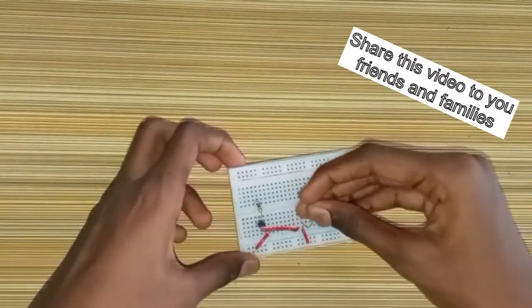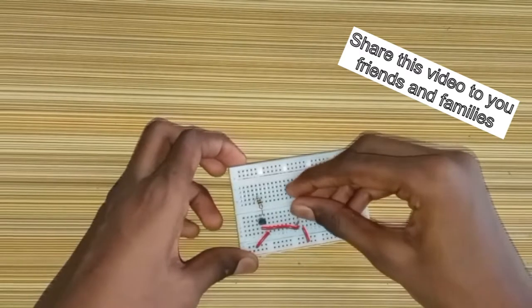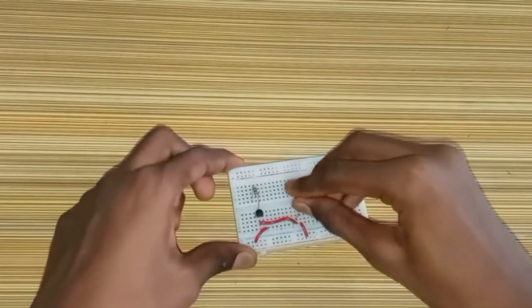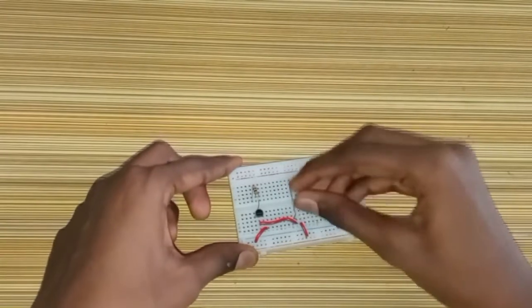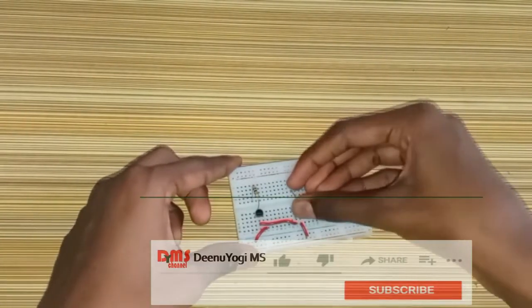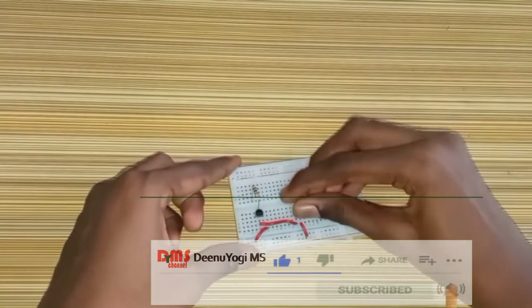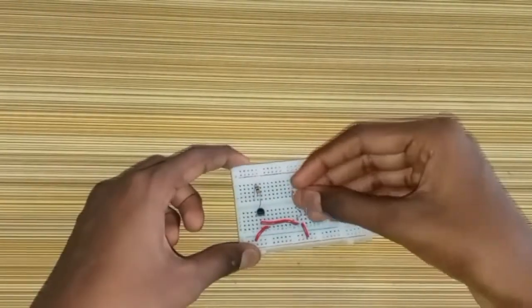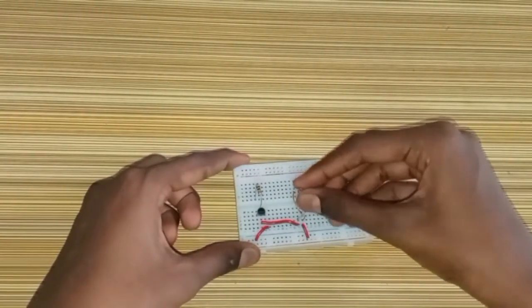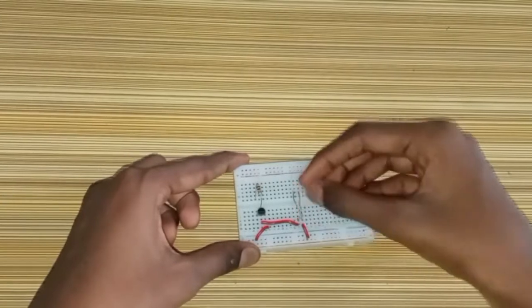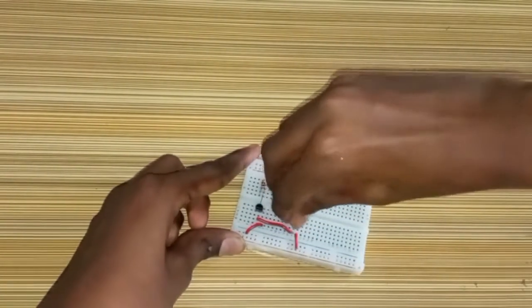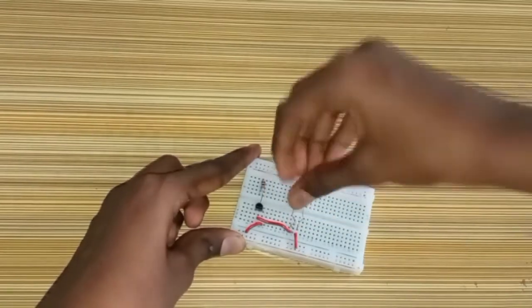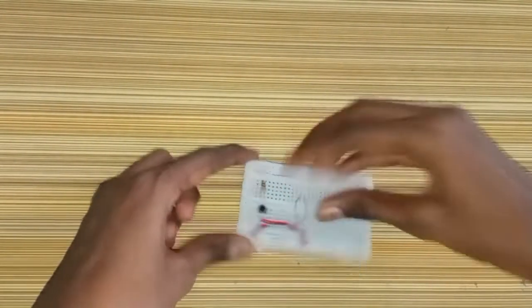Now take a non-insulated wire and connect it from the base of the transistor to the breadboard. Take another non-insulated wire and connect it from the positive rail to the breadboard. Make sure these two non-insulated wires do not touch each other.